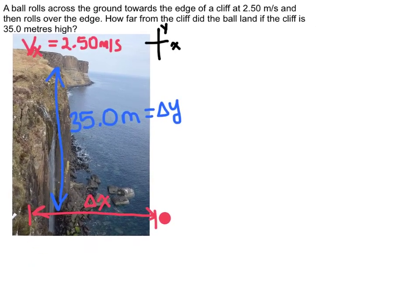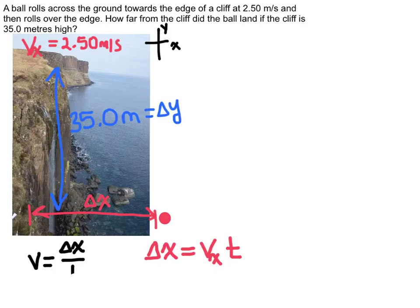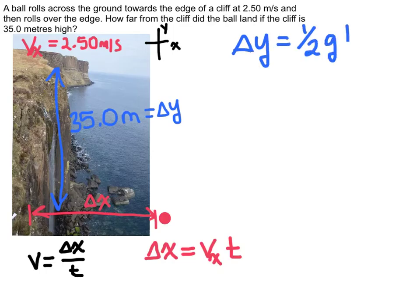To find delta x, the equation is delta x equals the velocity in the x direction times time — this comes from velocity equals change in position over time. I know v sub x but I don't know time. To find time, I can treat this as a free fall problem, working in the vertical component, since a ball rolling off a cliff is the same as dropping a ball in free fall. The free fall equation is delta y equals one half of g times t squared.